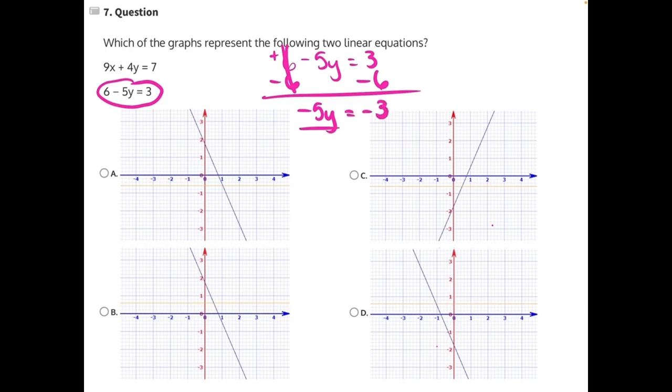Then negative 5 is being multiplied to y, so we need to do the opposite and divide both sides by negative 5. These two 5s will cancel, leaving us with y equals a positive 3 fifths.